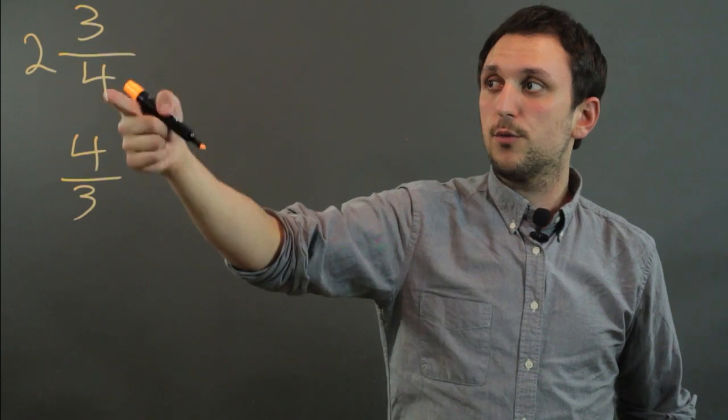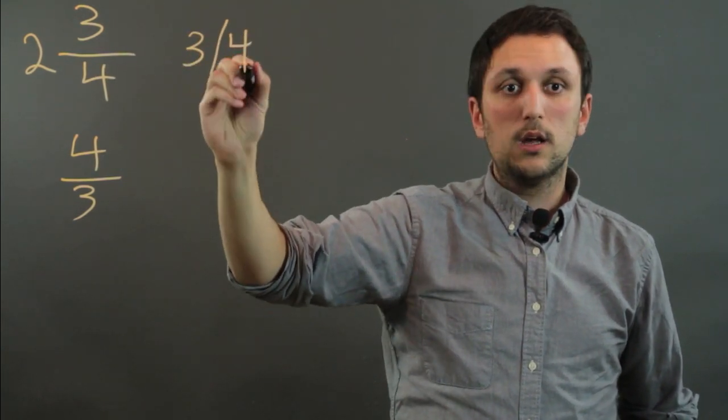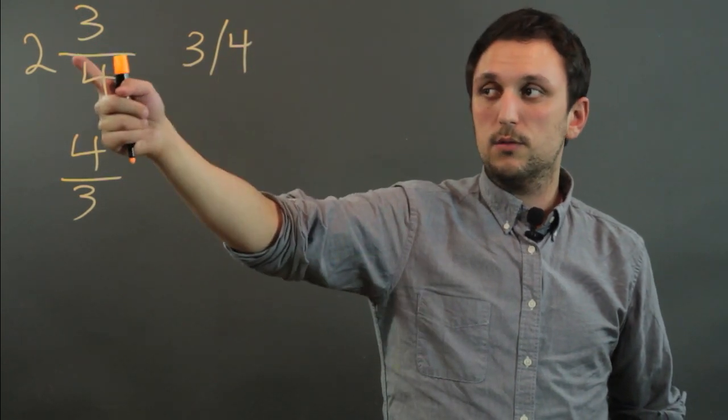Another is if you have the number 3 fourths, you can write it 3 over 4, or you can write it 3 slash 4. So you can have a diagonal, or you can have a horizontal line.